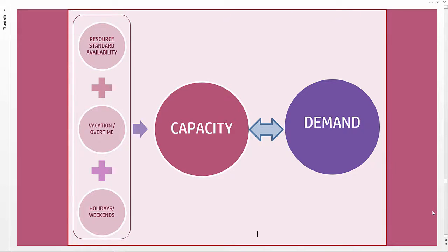This template uses certain inputs to automatically calculate the capacity — for example, the resources' standard availability, any vacation or overtime taken by the resources, and any company holidays or weekends. All of these are factored in to calculate capacity automatically and then compared with the demand data to calculate the surplus or deficit. The term resource is used throughout, and is interchangeable with employee for this template.